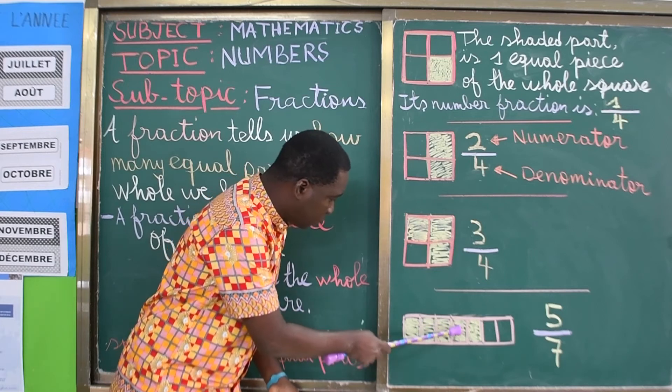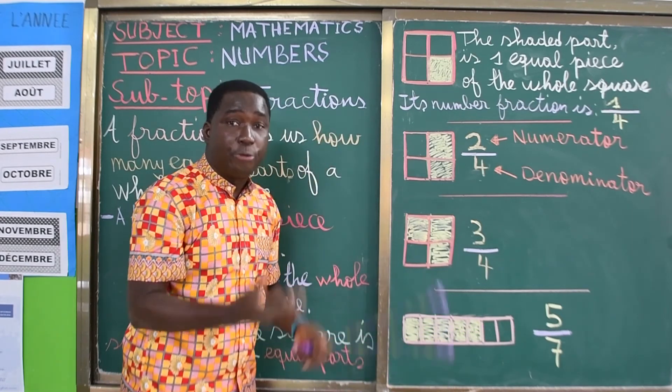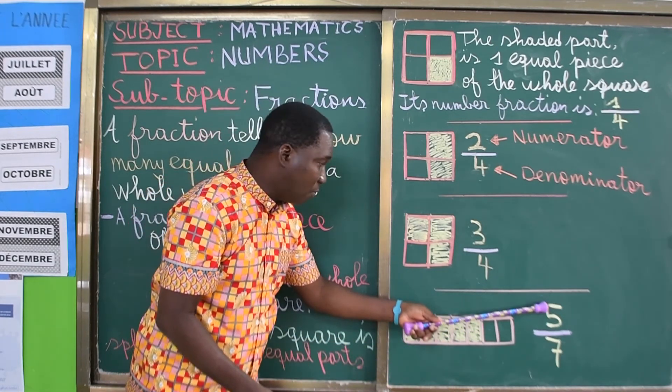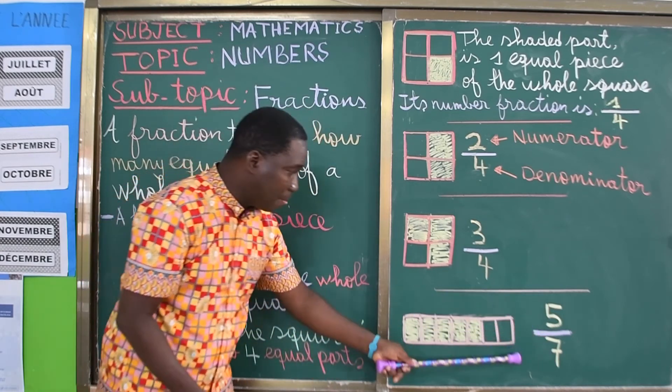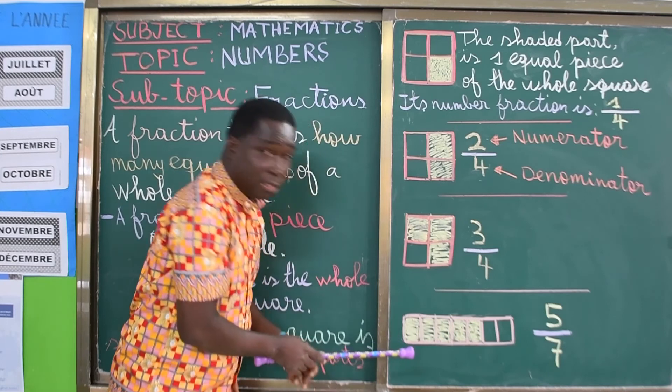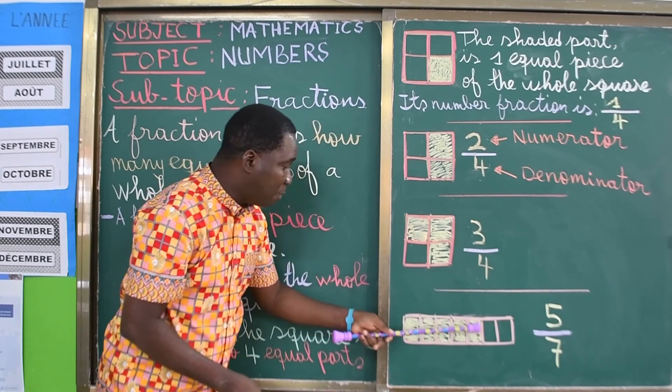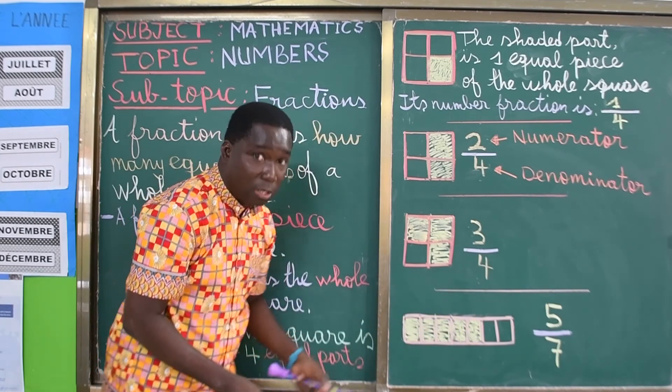One, two, three, four, five. So I'll read the fraction five over seven. The seven is a whole bread that is being divided into seven. And the five is the part that I have colored or shaded. Do you understand?